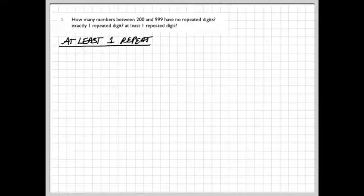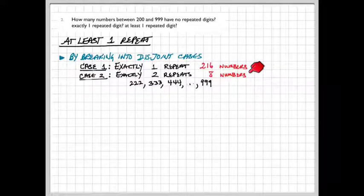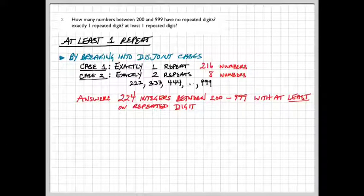For the third part of this question, we want to know how many numbers have at least one repeat. We can break this down into two disjoint sets: case one will be the numbers that have exactly one repeat. We just did that in the previous part. There are 216 such numbers. And case two will be the three-digit numbers that have all three of their digits exactly the same. Well, that's going to be 222, 333, 444 through 999. There are eight of those. By the sum rule, we add those together to give us a grand total of 224 integers that are between 200 and 999 with at least one repeated digit.